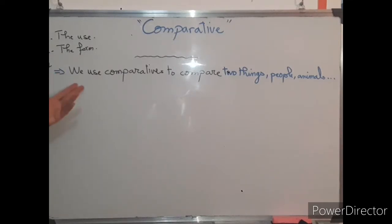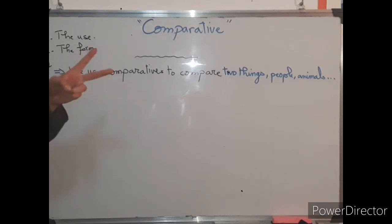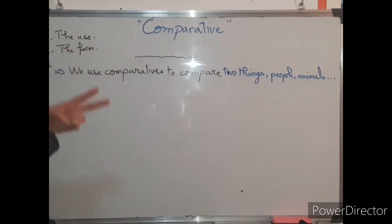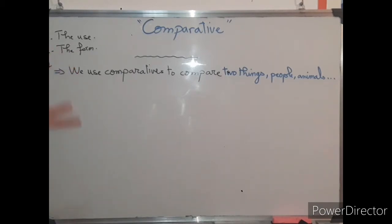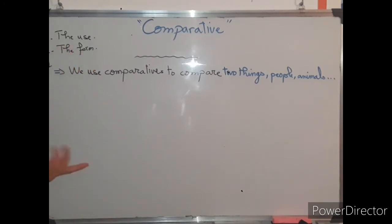We use comparatives to compare two things. To make a comparison, we must always have two things: two people, two animals, etc. So always number two — two people, two things, two animals, and so on.